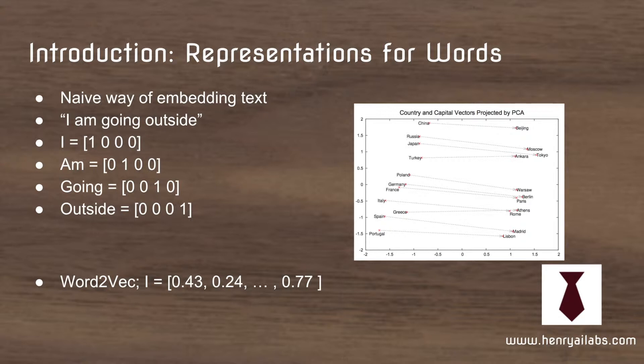The idea of Word2Vec is to use this predict-the-context idea to convert these words into vectors that are lower-dimensional and exist in a more semantic space. The image on the right shows that you can cluster words that are similar to each other.